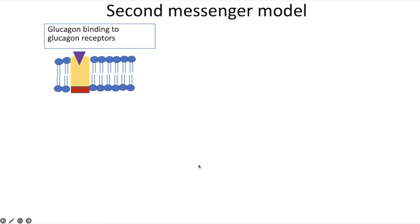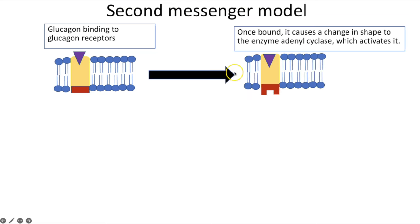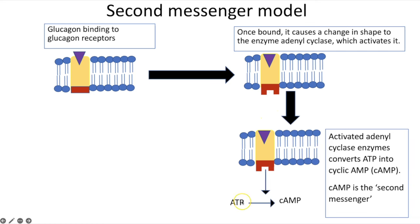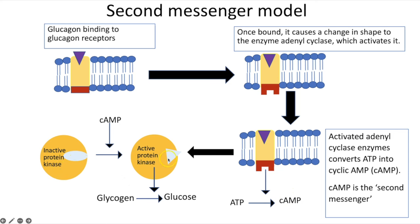Gluconeogenesis only occurs if you haven't eaten carbohydrates for a prolonged period and your glycogen stores are used up. This process is known as the second messenger model: glucagon (first messenger) binds to receptors, causing adenyl cyclase to change shape and become activated, catalyzing the conversion of ATP into cyclic AMP (second messenger). Cyclic AMP causes inactive protein kinase to become active protein kinase, which catalyzes the hydrolysis of glycogen into glucose, which is then returned to the blood.